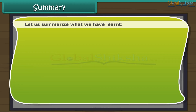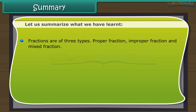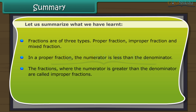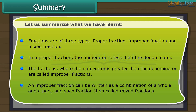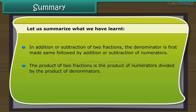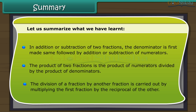Summary. Fractions are of three types: proper fraction, improper fraction, and mixed fraction. In a proper fraction, the numerator is less than the denominator. Fractions where the numerator is greater are improper fractions. An improper fraction written as a combination of a whole and a part is called a mixed fraction. In addition or subtraction, denominators are first made the same, then numerators are added or subtracted. The product of two fractions is the product of numerators divided by the product of denominators. Division of a fraction by another fraction is done by multiplying by the reciprocal of the divisor.